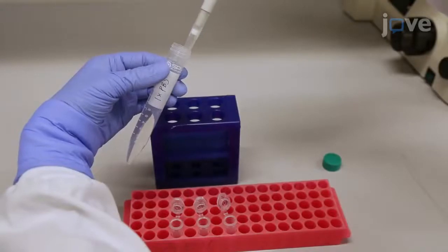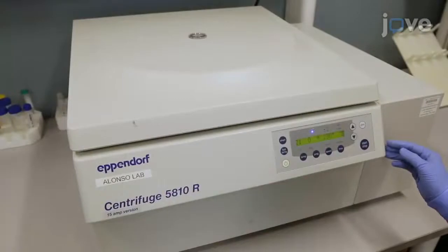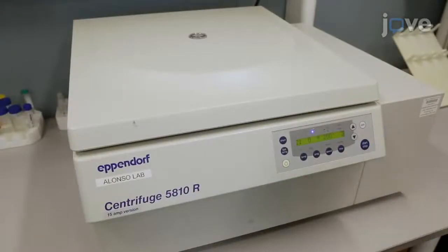Add 1-milliliter of PBS and centrifuge in a swinging bucket centrifuge until the speed reaches 200 times gravity and then stop the spin.